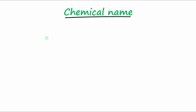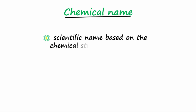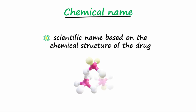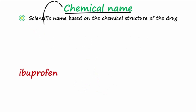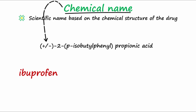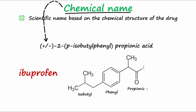The chemical name is the scientific name of the drug that is based on the actual chemical structure of the drug. For example, the drug ibuprofen's chemical name is 2-(4-isobutylphenyl)propionic acid, and is made of several chemical groups. A portion is made of the isobutyl group, the phenyl group, and propionic acid. Putting these together, we get the long chemical name, which is 2-(4-isobutylphenyl)propionic acid.